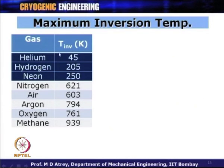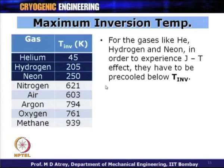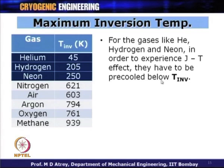There are various gases with their own inversion temperatures. Gases like helium, hydrogen, and neon have inversion temperatures of 45, 205, and 250 Kelvin respectively — all below room temperature — while all other gases shown have inversion temperatures above room temperature of 300 Kelvin. For gases like helium, hydrogen, and neon, in order to experience JT cooling, they must be pre-cooled below their inversion temperature first.